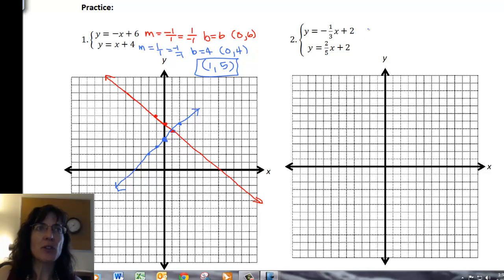So I need to look at negative one-third for my slope, m equals negative one-third. My other way of looking at that is one over negative three, and then my b is two, so my y-intercept is zero, comma, two.